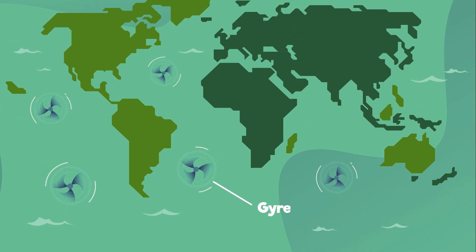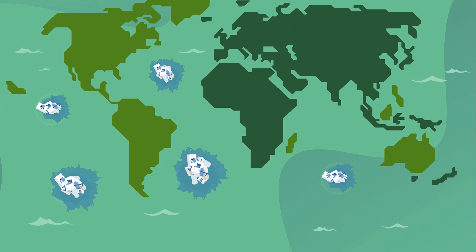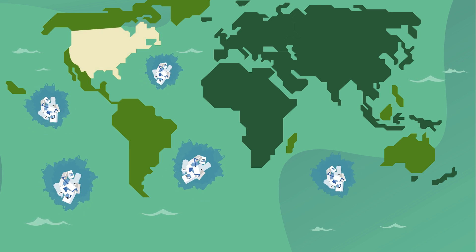Circular ocean currents called gyres collect up this plastic and bring it together in giant floating islands or garbage patches, some of which are as big as the United States of America.